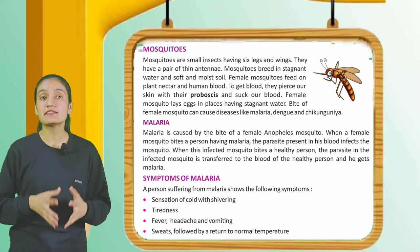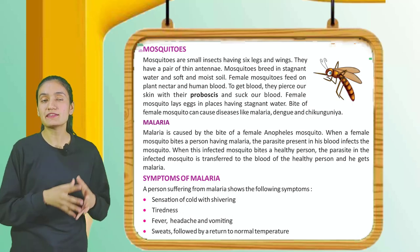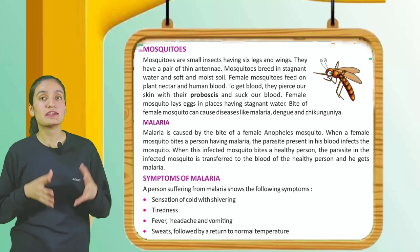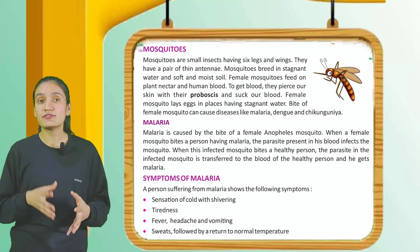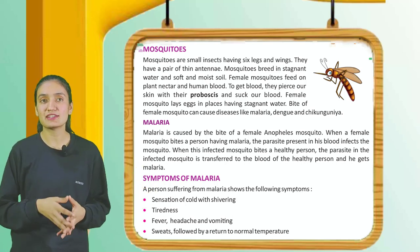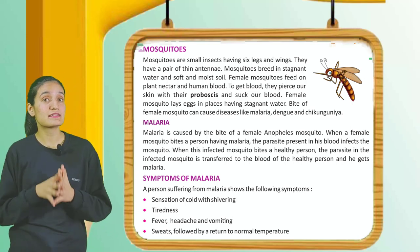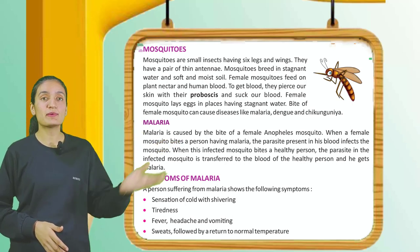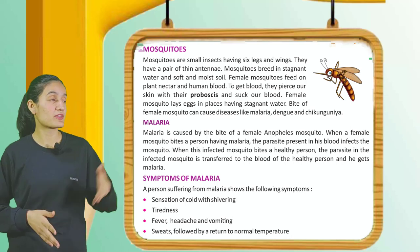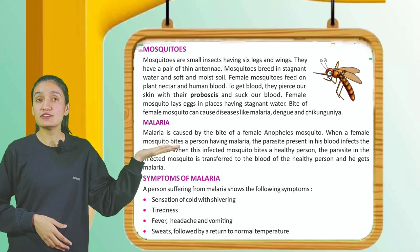Malaria: Malaria is caused by the bite of a female Anopheles mosquito. When a female mosquito bites a person having malaria, the parasite present in his blood infects the mosquito. When this infected mosquito bites a healthy person, the parasite is transferred to that person's blood and they get malaria. Symptoms include sensation of cold with shivering, tiredness, fever, headache, vomiting, and sweating followed by return to normal temperature.